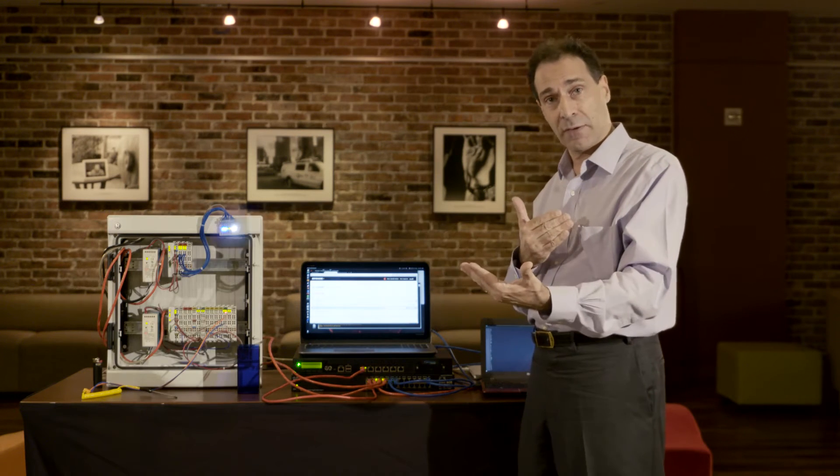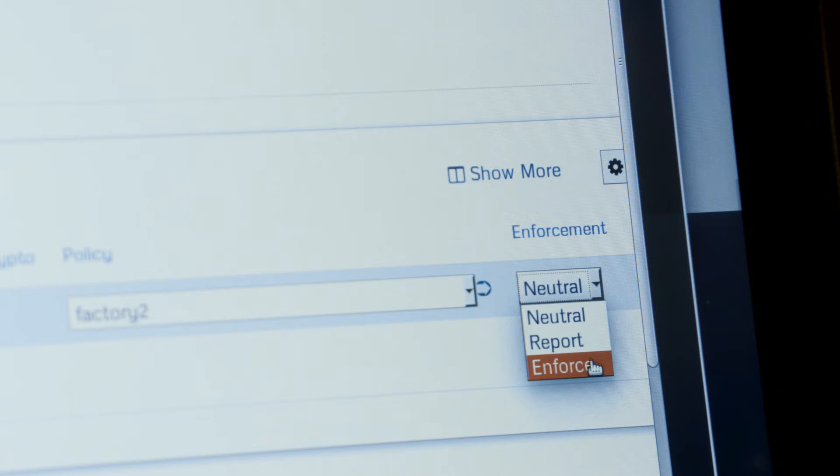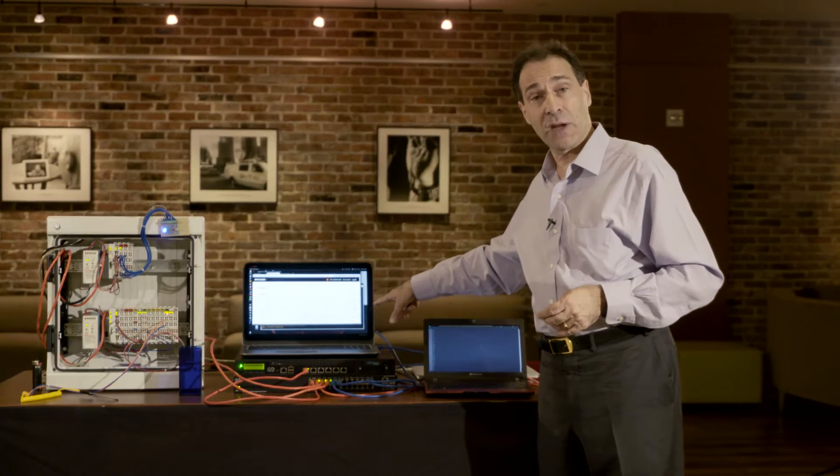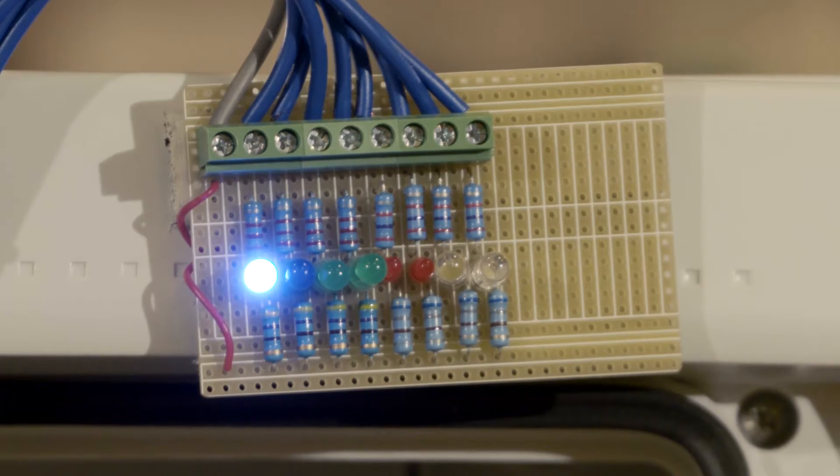So let me show you how we apply a policy in the Bayshore device that protects this protocol and recognizes this kind of attack, and let me just switch it on. Now I've switched on the policy in the Bayshore device, and as you can see, the actuator changes its behavior. It's now back to normal, it's not showing the chaotic behavior we saw a moment ago.